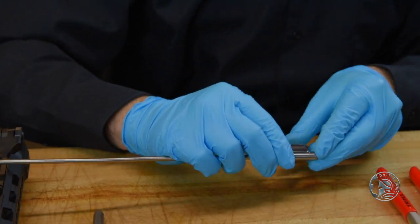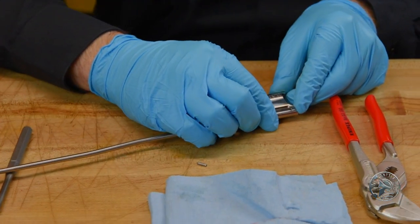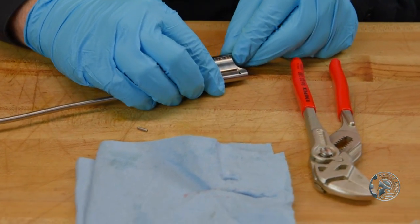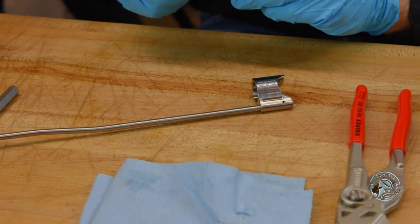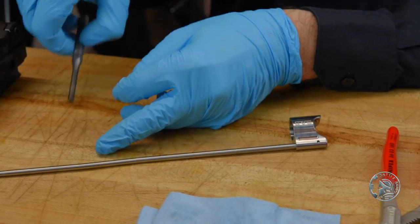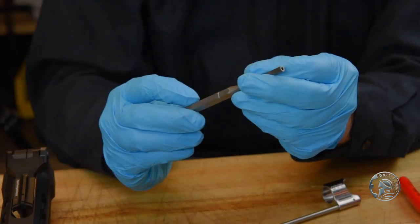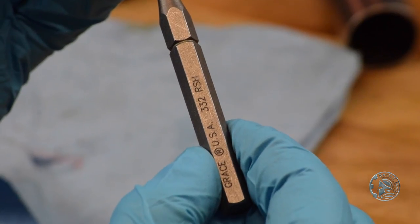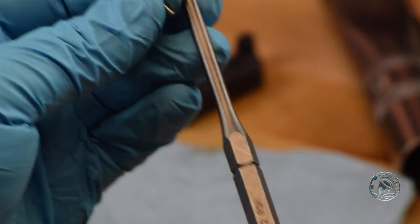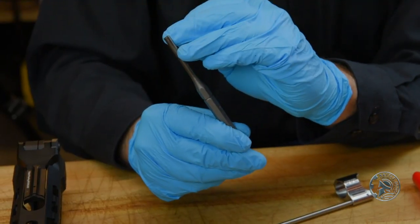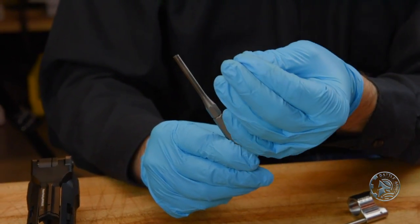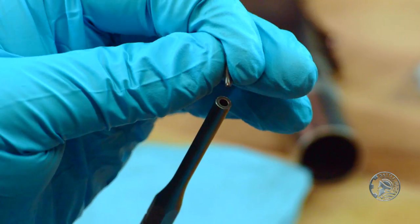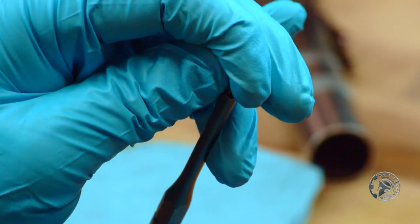Now comes the tricky part. We need to install the pin without allowing the gas tube to rotate. This is a 3/32 roll pin starter punch. It has a hole at the very tip that's recessed to allow you to place the roll pin into the punch.